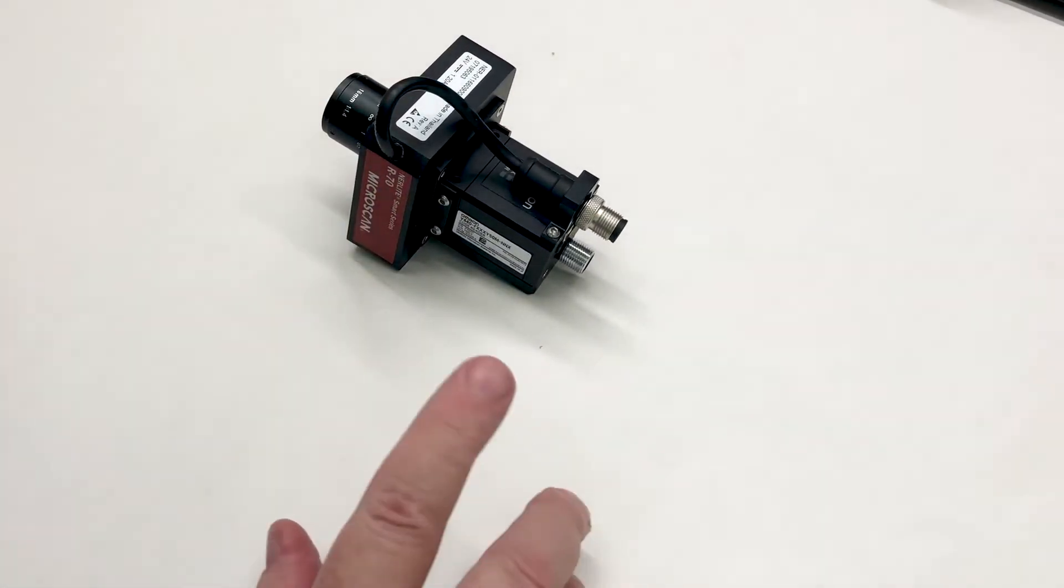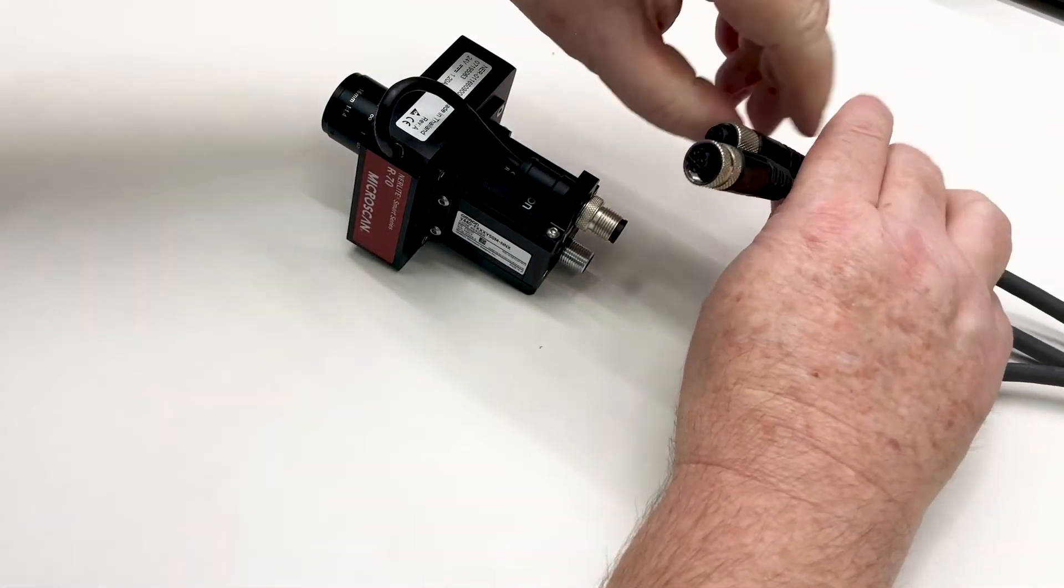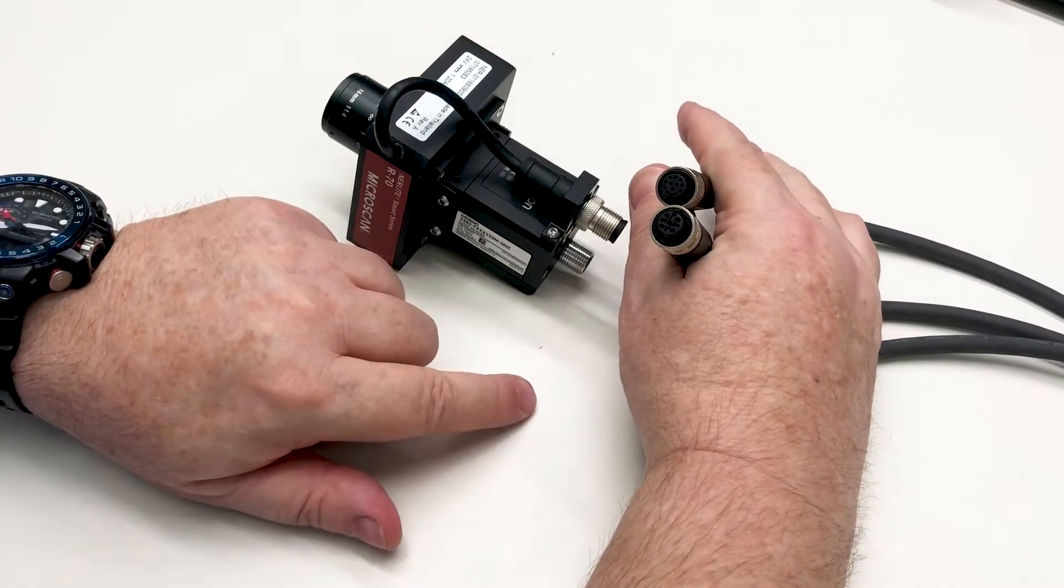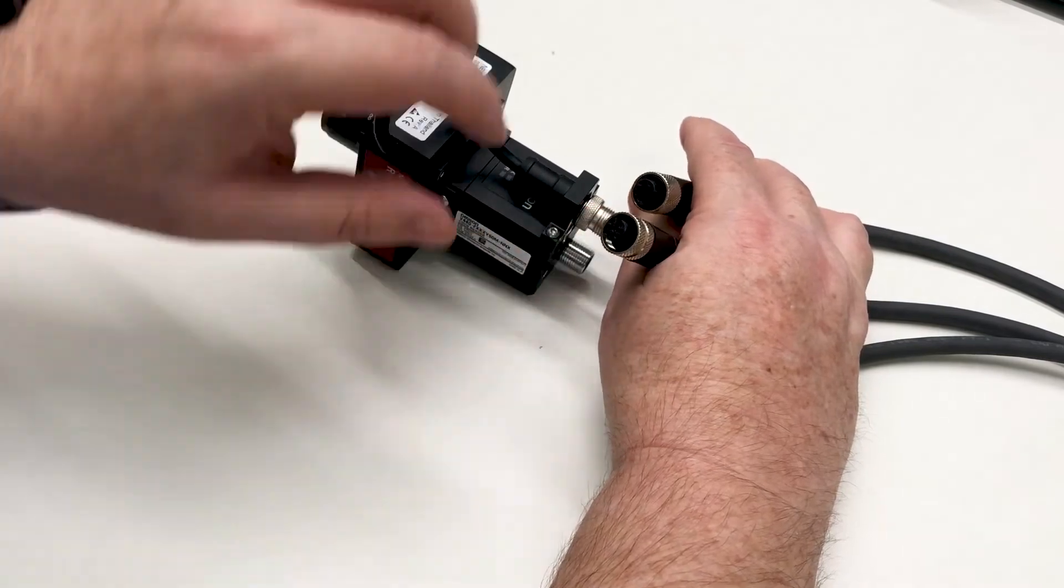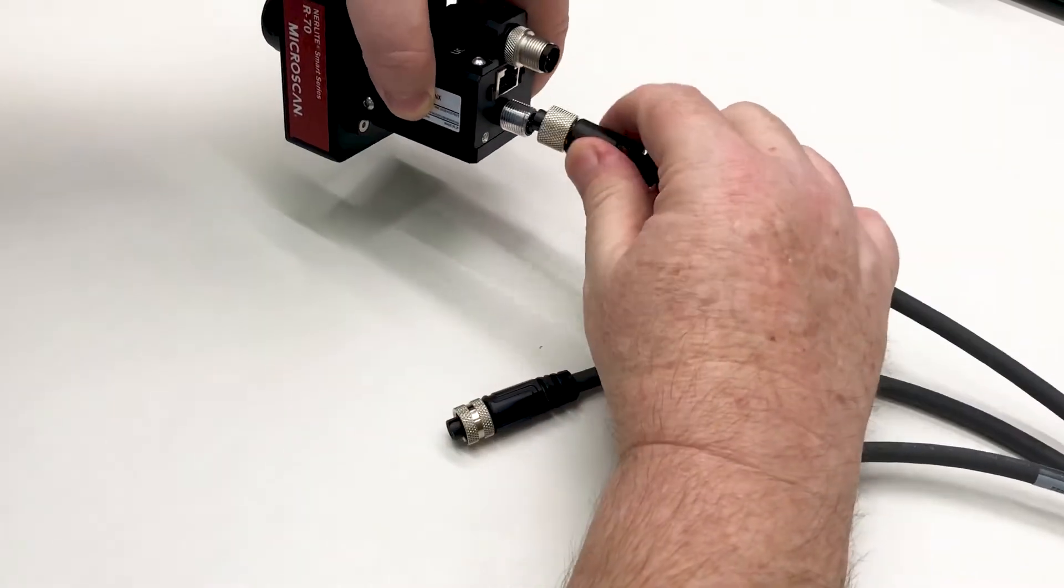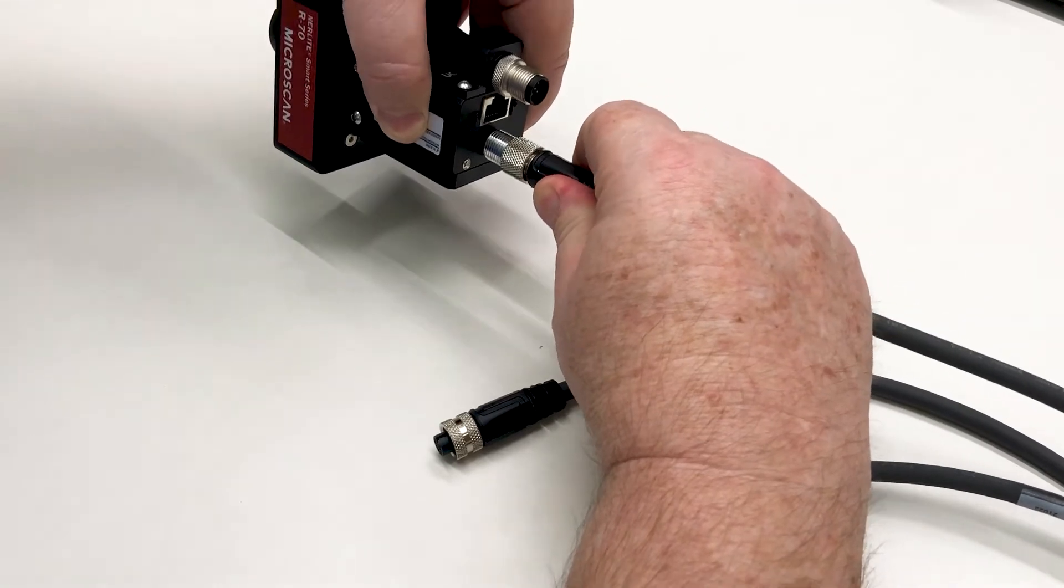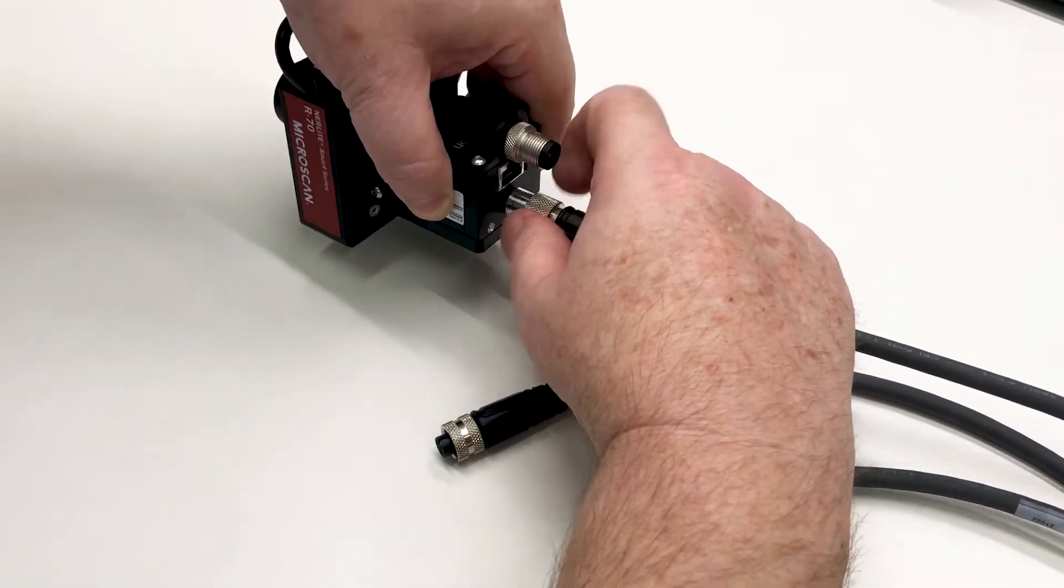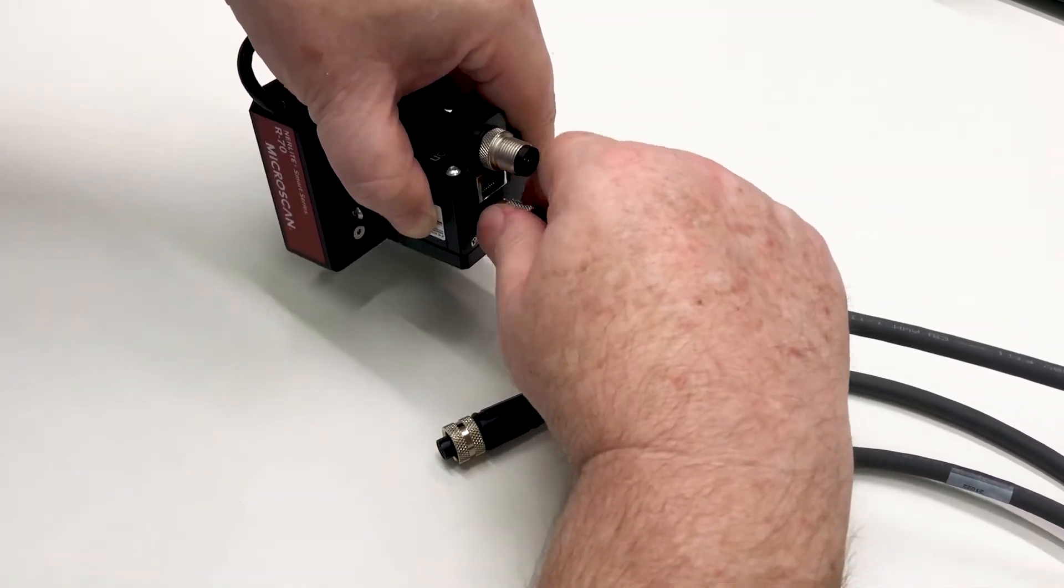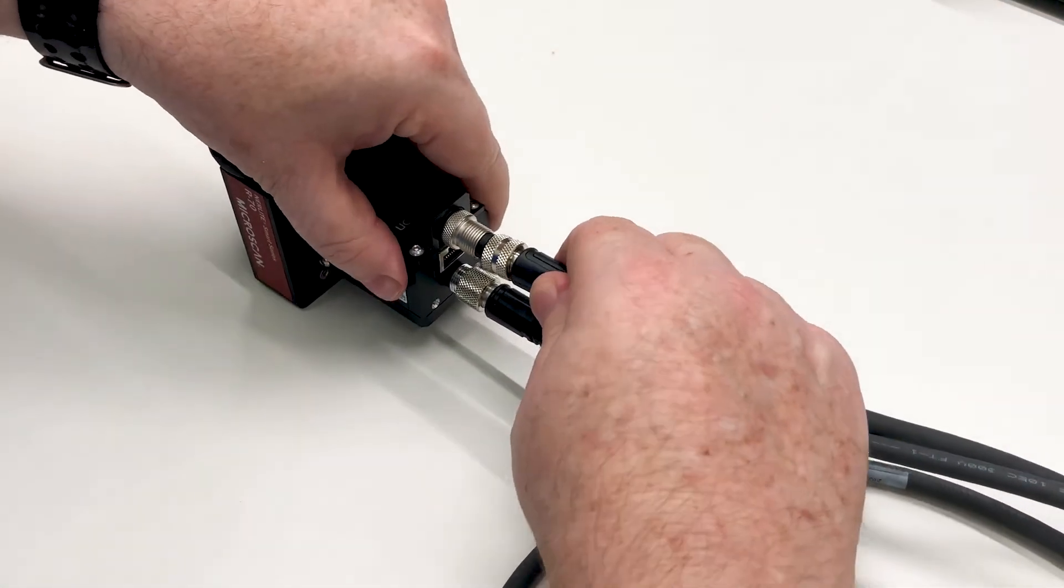Now if you're using the NURLite you're going to want to use the YIO cable. You have two connections here. The one with fewer connections goes to the light, and the one with more goes to the camera. So I'll put the one with more into the camera first. You just gently rotate until you feel it pop in, and then screw it in place. You may have to push in the cable as you go. Repeat the same thing for the light cable.